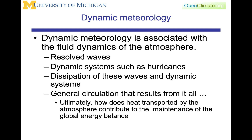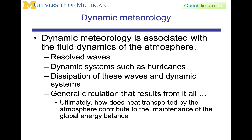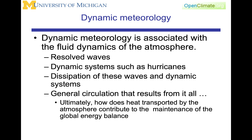There are dynamic systems such as hurricanes, and hurricanes often start as waves and then they evolve into a vortex, a closed rotational feature. Dynamic meteorology is not only about the nature of those particular waves, but how they form and how they dissipate — and when they dissipate, they will have an influence upon the circulation and the flow as well.